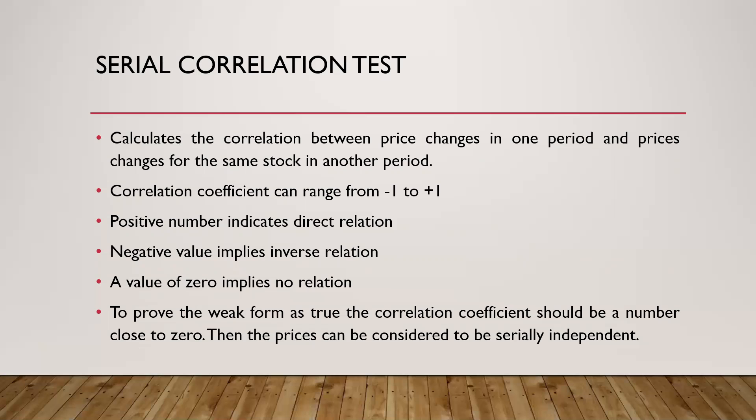They state that there is no relation between the past price and the current price. So if we calculate the correlation coefficient of two periods of the same stock and find the answer is close to zero, then it means there is no relation between the past and present price, and it will be proven that the weak form efficiency is true.